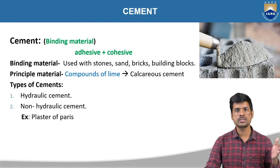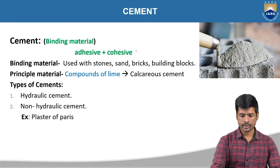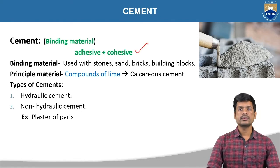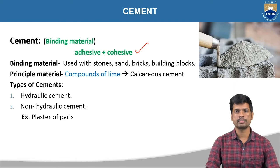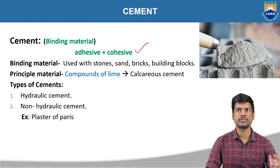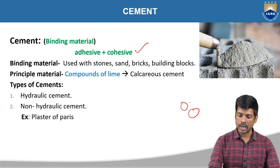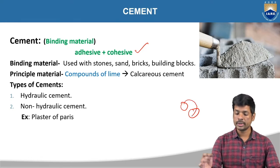Coming to cohesive property — cohesive property is nothing but attraction between the same types of molecules. Like if you take two cement particles, and if you add water to these two particles, it is going to bind with each other.